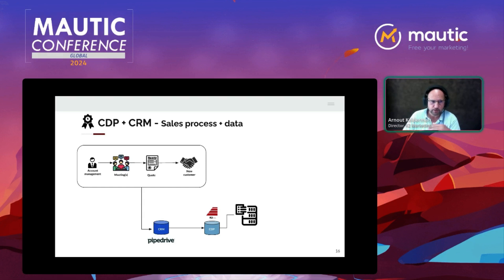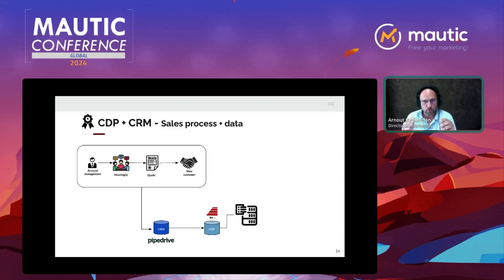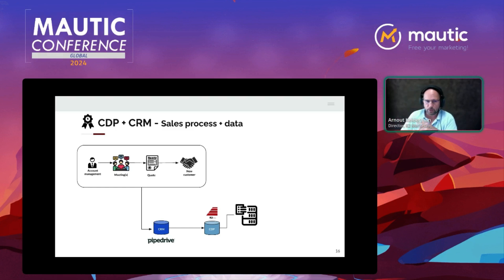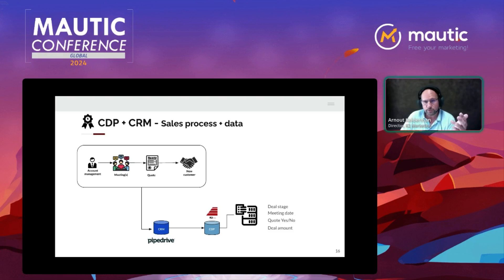Again, the five most important things we always take into account when developing and using these journeys: building relationships, conversion focus, continuous testing, and measuring the total journey. Then onto the sales process — mainly CRM data. We track: was there a meeting, did it lead to a quote, and ultimately a new customer won? From the data we collect we track deal stage, meeting date, outcome, quote yes or no, deal amount — so we can also calculate the ROI.